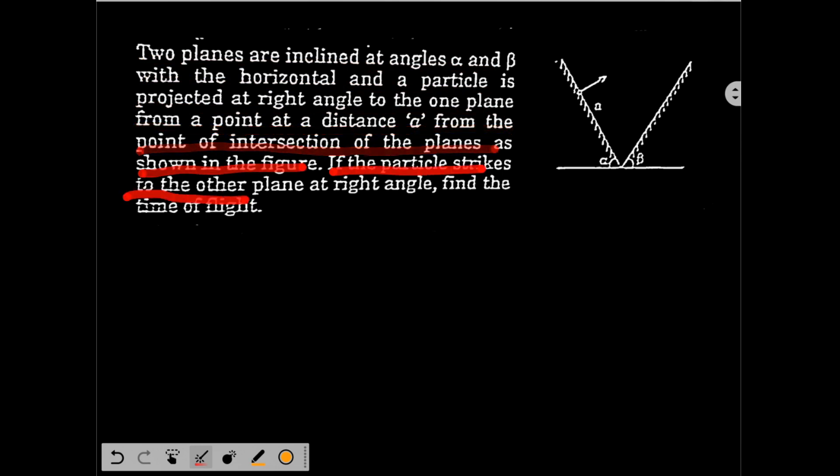If the particle strikes to the other plane at right angle, find the time of flight. So here we have got two inclined planes. This inclined plane is making alpha angle. This inclined plane is making beta angle with horizontal.